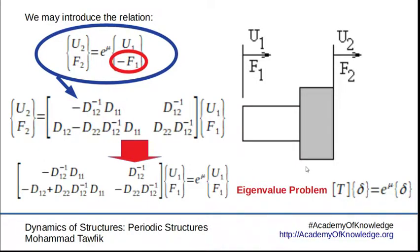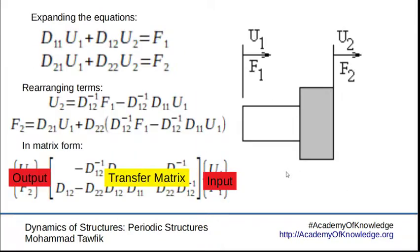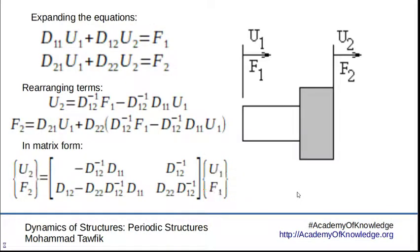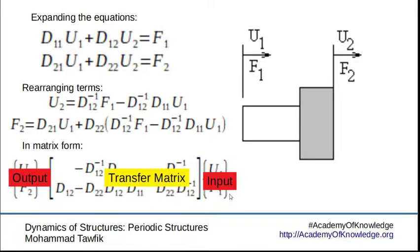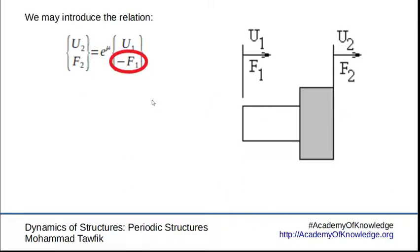Now we are relating the inputs of one cell to the inputs of the adjacent cell using an eigenvalue problem. And the eigenvalues are those of this matrix, which we will call T. T is not the transfer matrix. Notice here, just to make things clearer, the transfer matrix related the inputs to the outputs.